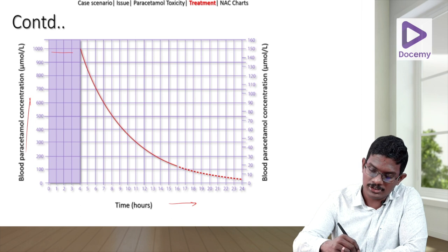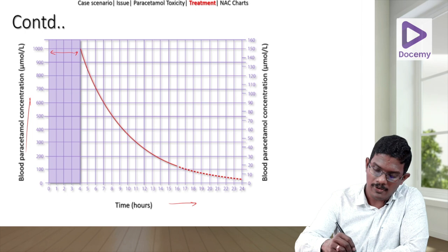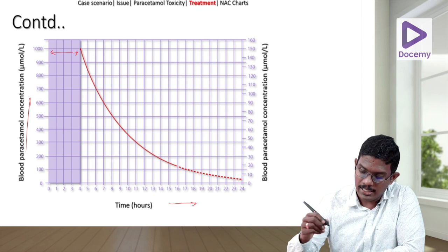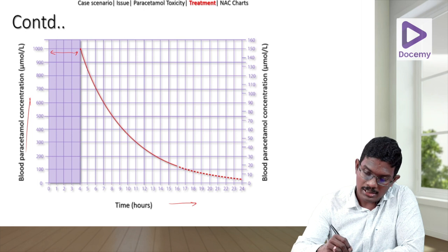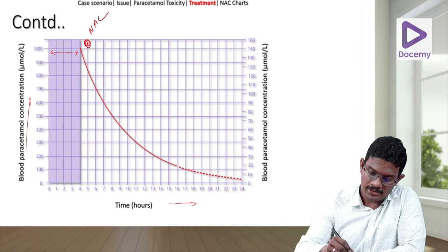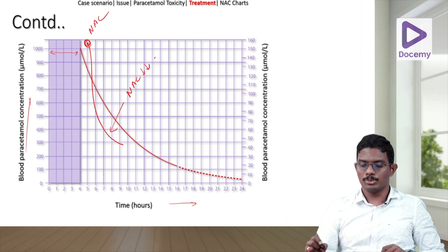The nomogram is a pictorial presentation where the x-axis shows time in hours and the y-axis shows blood paracetamol concentration. Assessment begins only after four hours post-ingestion. If the patient has a value of around 1000–1500 micromoles per liter, it's a high dose and you start N-acetylcysteine. As levels dip down, you reduce the NAC accordingly.